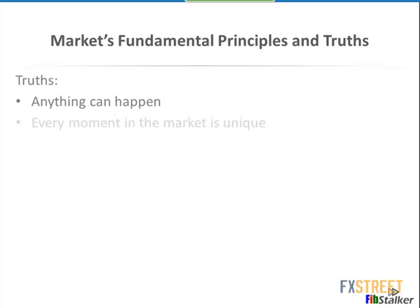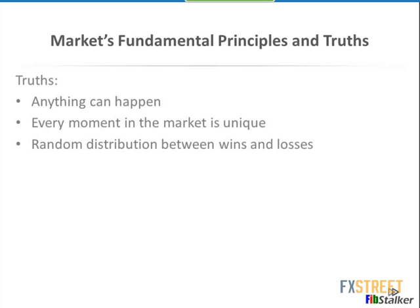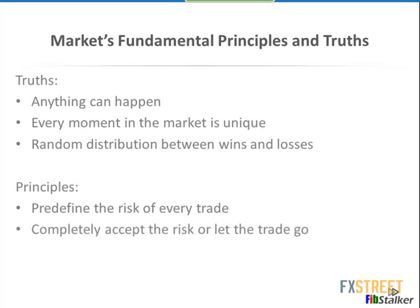What you see here are principles that apply to risk management. Anything can happen in the market. Every moment is unique. Our edge, our trading system — the trades generated by our system — are no more than a distribution between wins and losses, and we have to know that. We must define the risk of every trade and completely accept it. A lot of people don't accept the risk they are taking. They take 10% risk in one trade but don't entertain in their mind the idea that the stop loss could be hit. According to statistics, 22% of traders from a large North American broker don't use stop losses, and as a result often lose their capital.